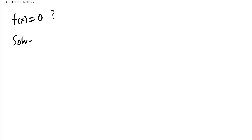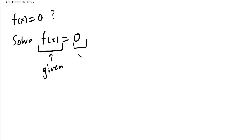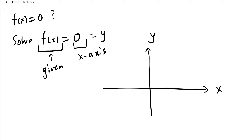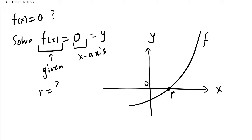When we say 'solve f(x) = 0,' we mean graphically finding where the curve crosses the x-axis (y = 0). Assume the graph has one real solution — we want to find that r value, which is the root. Of course, for different polynomials or equations there can be more than one real solution — maybe two, three, or four — positive or negative. Newton came up with a good method to approximate those real roots.